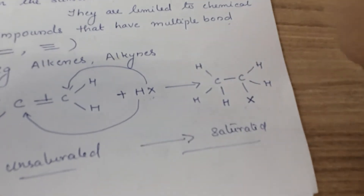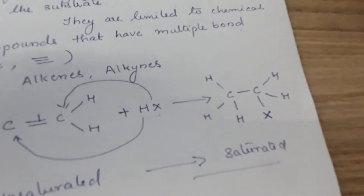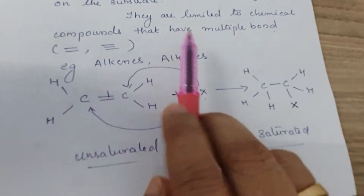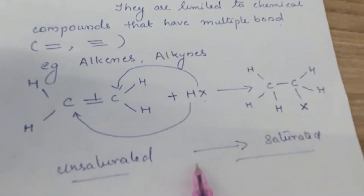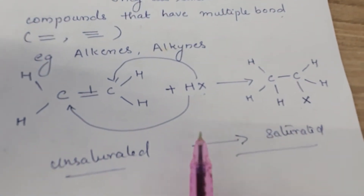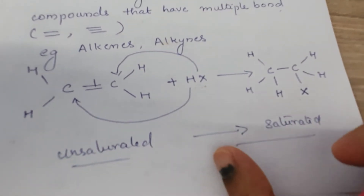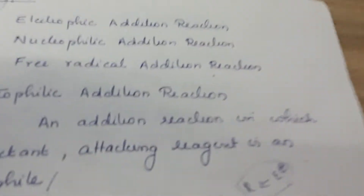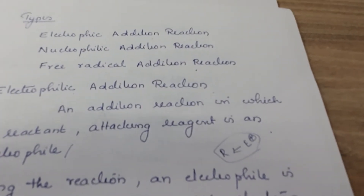In addition, the attacking agent adds to the substrate and a product is formed. The condition is that only compounds with a multiple bond will give addition reactions — that is very important. In the attacking reagent, there are different types: electrophilic addition reaction, nucleophilic addition reaction, and free radical addition reaction.